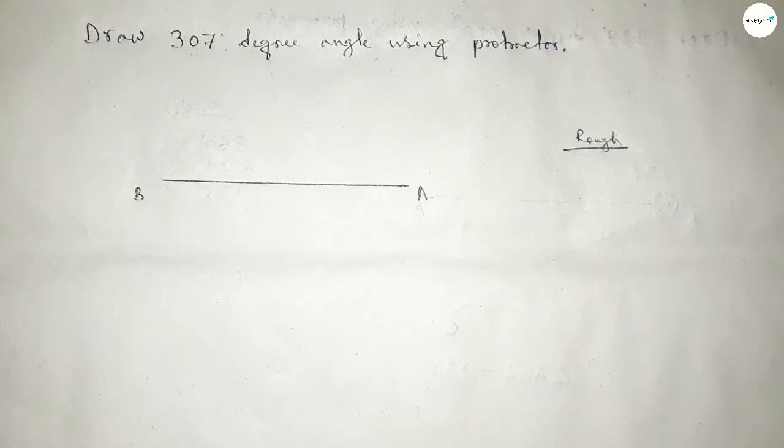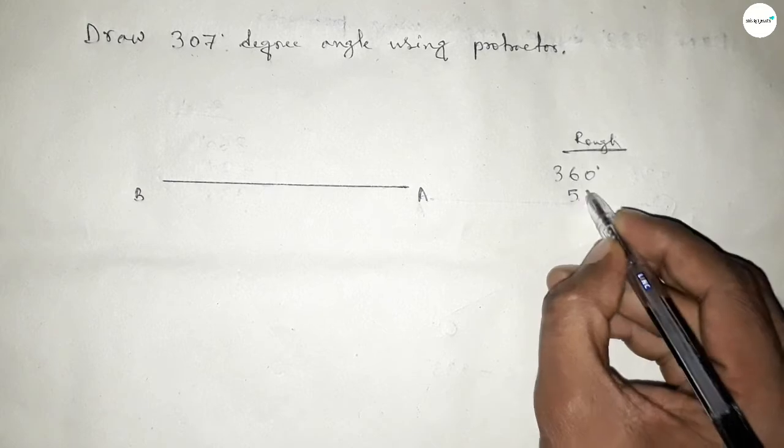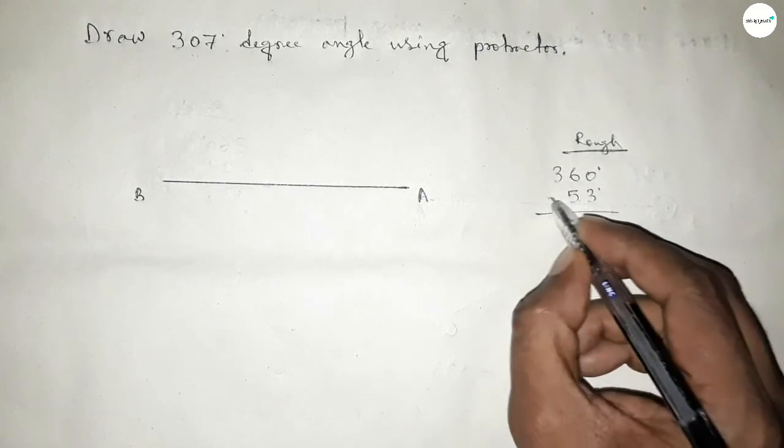So if we subtract 53 degree angle from 360 degree, then we can get 307 degree angle. So subtracting this.